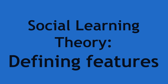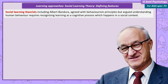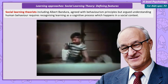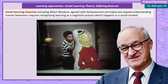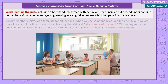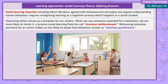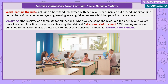Social learning theory — defining features. Albert Bandura is the most prominent social learning theorist and conducted one of the most famous psychology studies, the Bobo Doll experiment. While social learning theorists like Bandura agreed with many of the principles of behaviorism, they also argued that to understand human behavior, we need to accept learning as a cognitive process which takes place in a social context. We watch people around us, and they act as models for our own behavior. If we observe someone carrying out a behavior and we see they're rewarded, then we're more likely to imitate — meaning we're more likely to repeat the behavior. Social learning theorists call this process vicarious reinforcement.